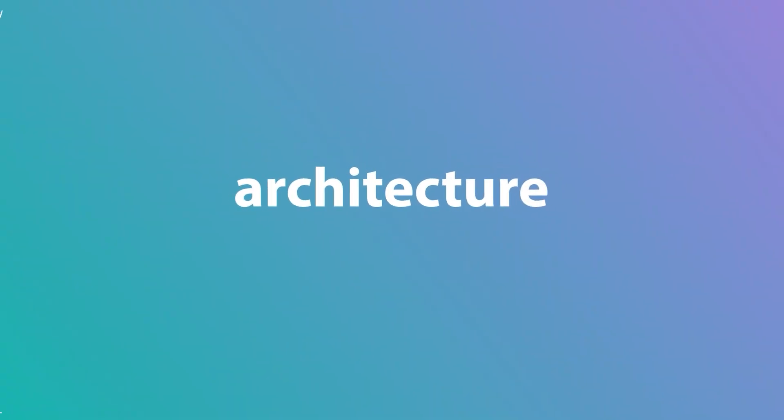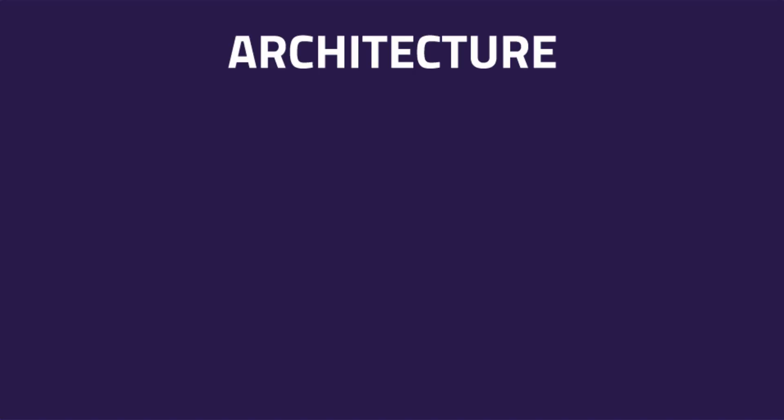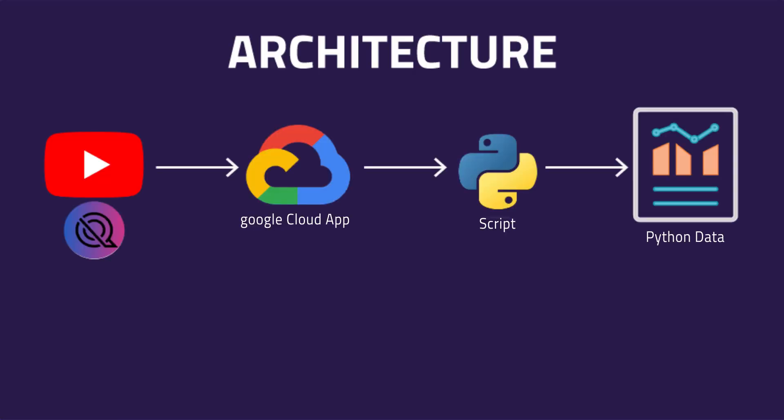Let's start with where it will fit best into the architecture. With Python scripts, they'll be useful just about anywhere. But for today's example, we're going to run the script locally to pull YouTube data and then analyze that data. We're going to need some libraries such as Google API Client, Pickle, Pandas, and Tabulate for analysis. We're starting with the most bare bones architecture — not worrying about storing the data or the results, just pulling and analyzing. Ideal for one-time data exploration.